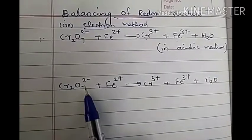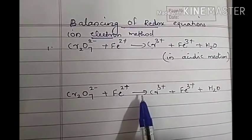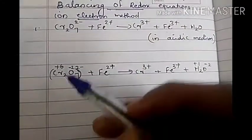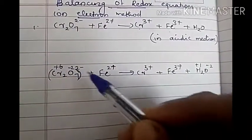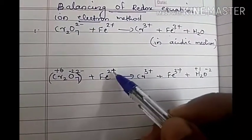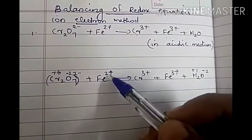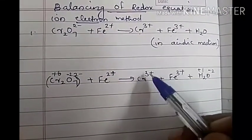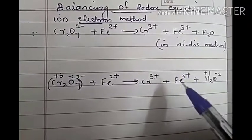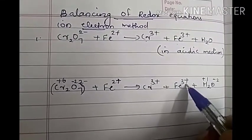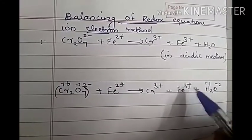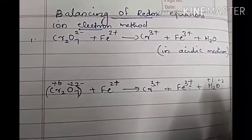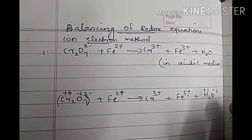First we have to write the equation and find out the oxidation numbers of each species. The oxidation number of chromium is plus six, oxygen is minus two, Fe²⁺ is a monatomic ion so its oxidation number equals its charge — plus two. Cr³⁺ is also monatomic, oxidation number plus three. Fe³⁺ is also monatomic, oxidation number plus three. In water, oxygen is minus two and hydrogen is plus one. These are the oxidation numbers of the different species present in the equation.